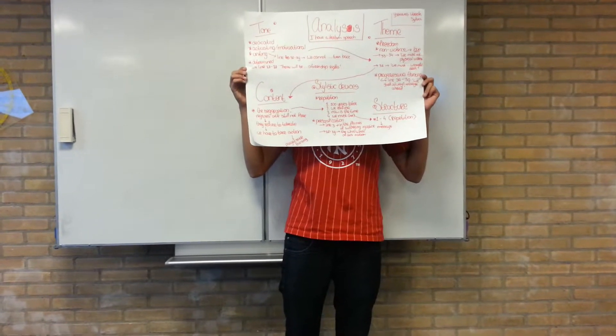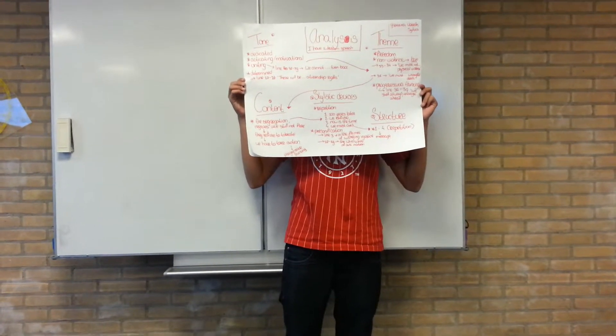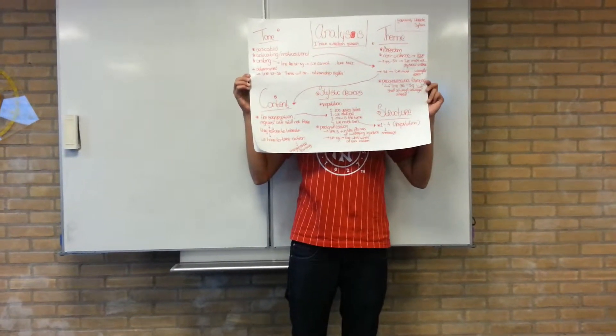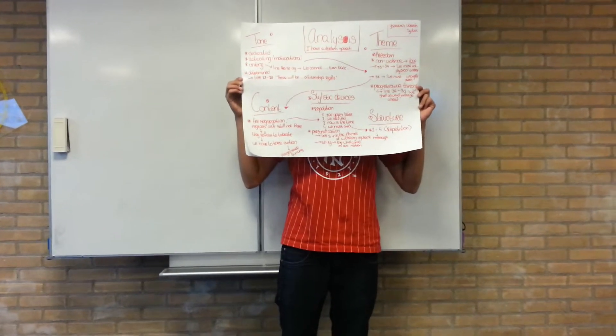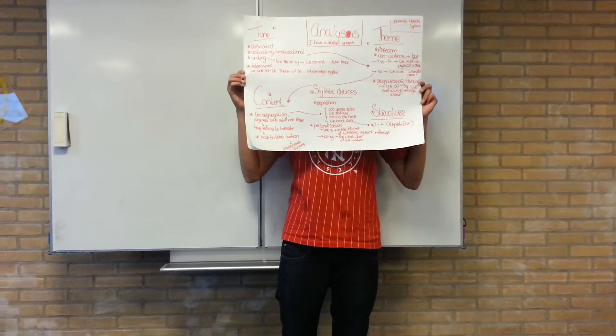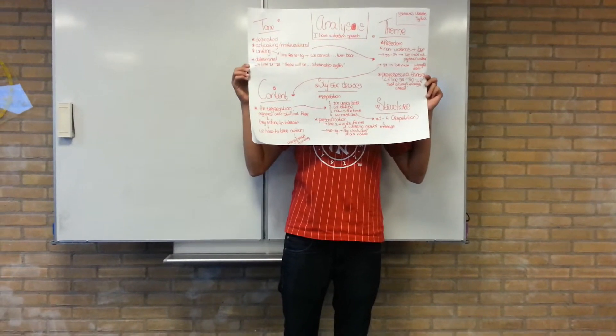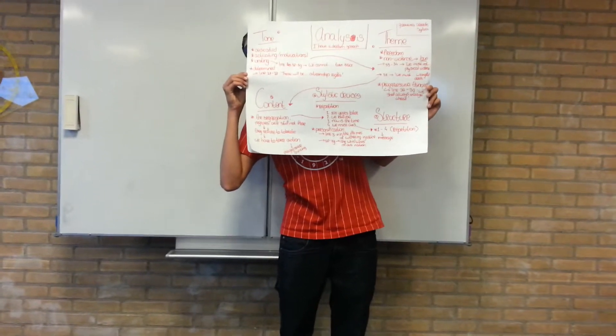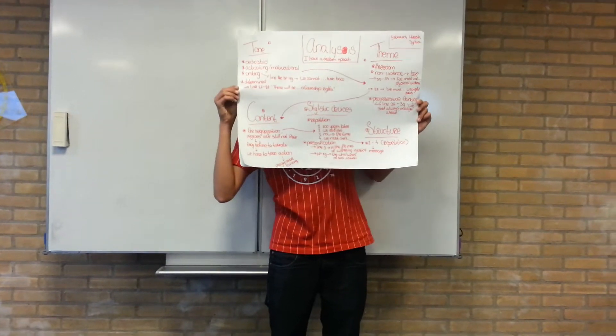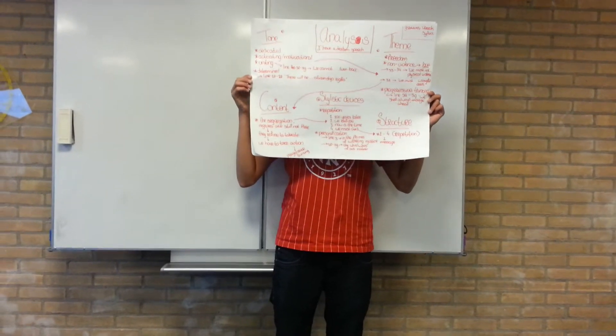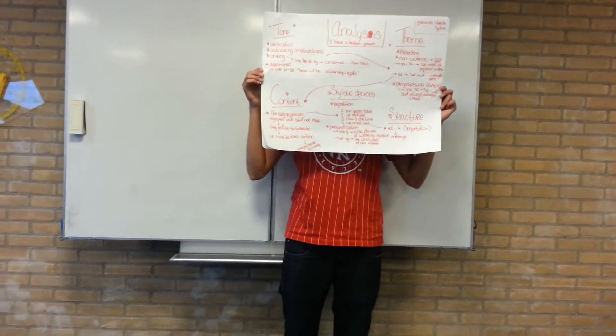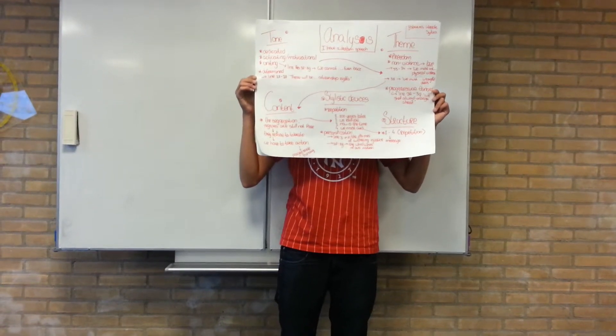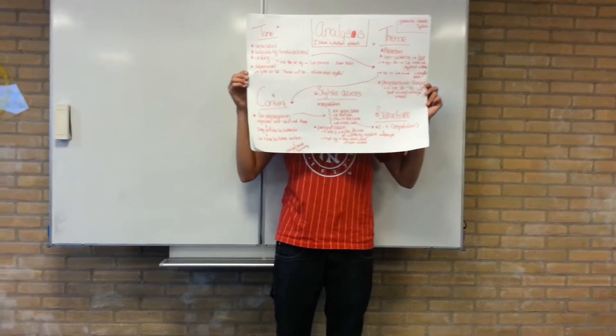Okay, so we're going to start by analyzing a part of the I Have a Dream speech. We'll start with the tone. The tone from this part is, he really talks about dedication towards the cause they're talking about. So what basically happens is he tries to accomplish something by talking slowly and nice, but he really wants to activate people. That's why we also put in activating and motivating, because he really wants to motivate all the people that are listening to take action.